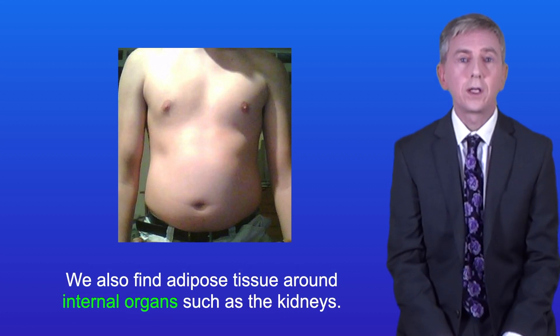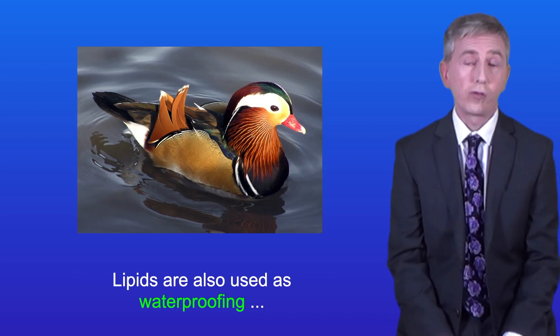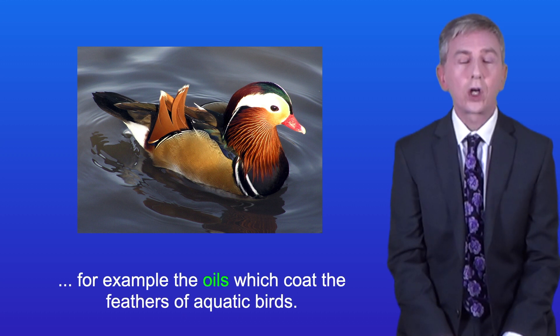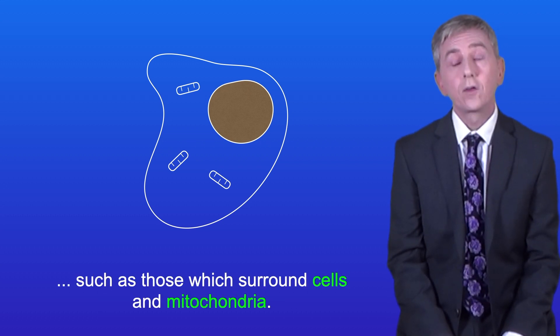We also find adipose tissue around internal organs such as the kidneys, and this helps to protect these organs from injury. Lipids are also used as waterproofing, for example the oils which coat the feathers of aquatic birds. And finally, lipids are a major part of the structure of membranes such as those which surround cells and mitochondria.